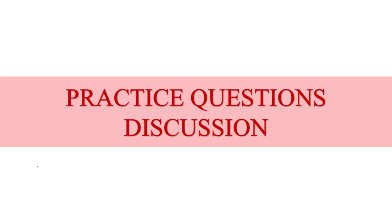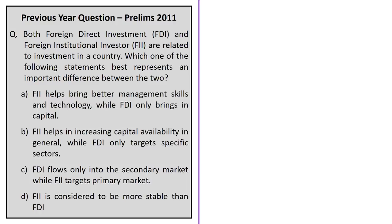The practice question from UPSC 2011 Prelims asks about the important difference between FDI and FII. Option A says FII brings better management skills and technology while FDI only brings capital — this is incorrect. Option B says FII helps in increasing capital availability in general while FDI targets specific sectors. Option C says FDI flows only into the secondary market while FII targets the primary market — this is incorrect, as FII invests through stock exchanges which is the secondary market.